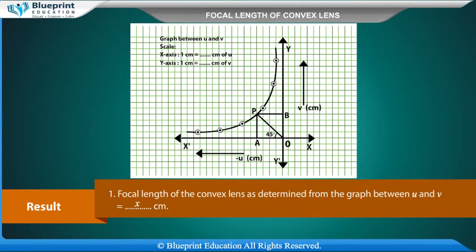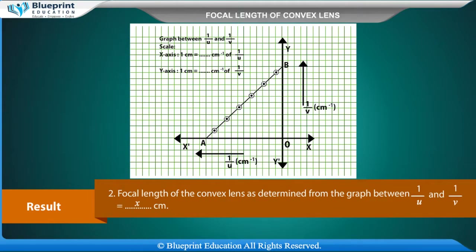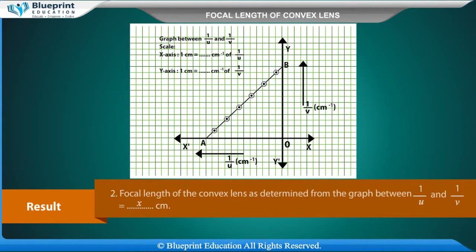Result: The focal length of the convex lens as determined from the graph between U and V is equal to x cm. The focal length of the convex lens as determined from the graph between 1/U and 1/V is also equal to x cm.